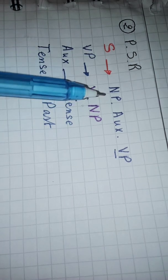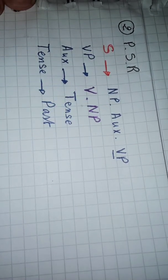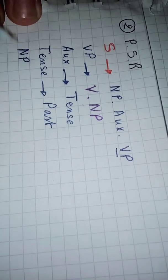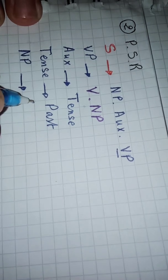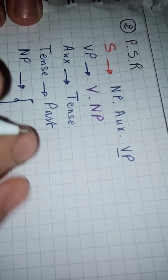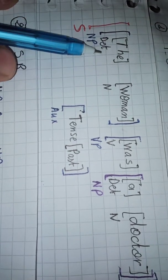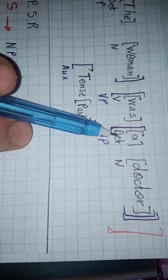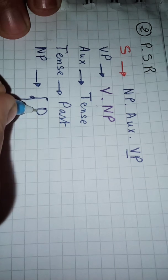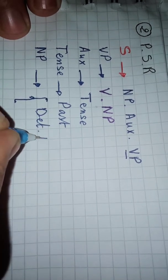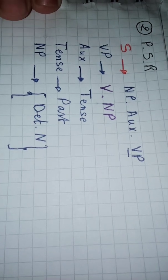We notice here that we have two noun phrases. So, let's talk about noun phrase. Both noun phrases consist of a determiner and a noun, so we'll mention in our noun phrase the determiner and the noun.